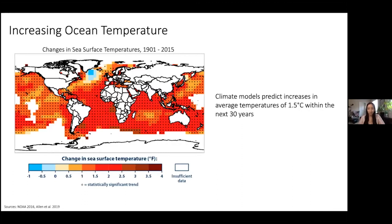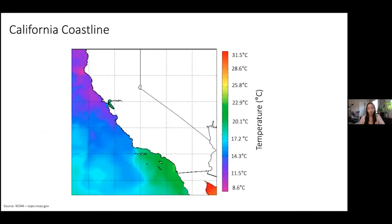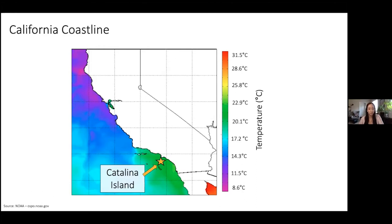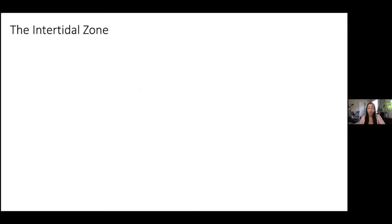If we zoom in on a coastline, we also know that there's natural geographic thermal variation that exists. This is a heat map showing the water temperature along our California coastline. Here's Catalina Island right here — this heat map was taken about two days ago from NOAA. It's a little warmer than normal, but it's summer, so we're about in between 20 and 23 degrees Celsius. I work on the coastlines, within the intertidal zone.